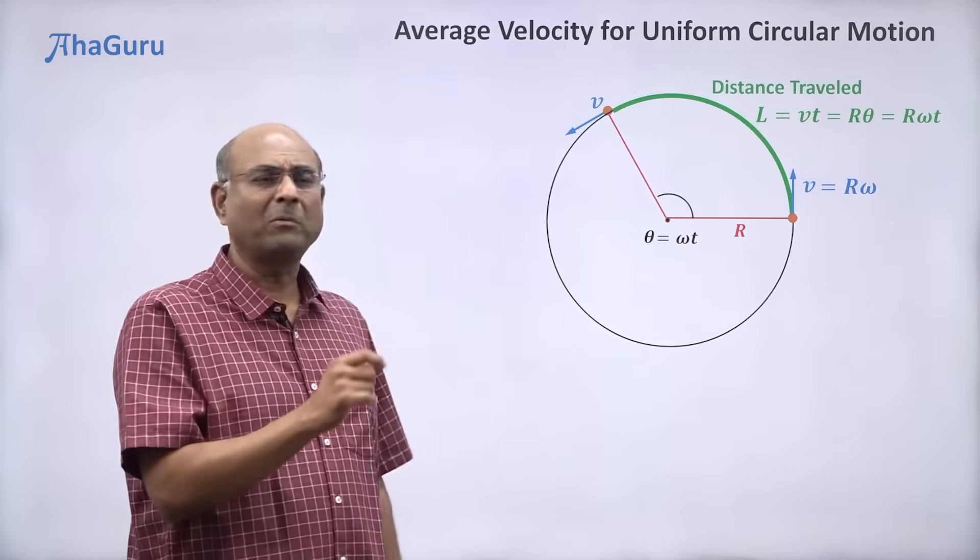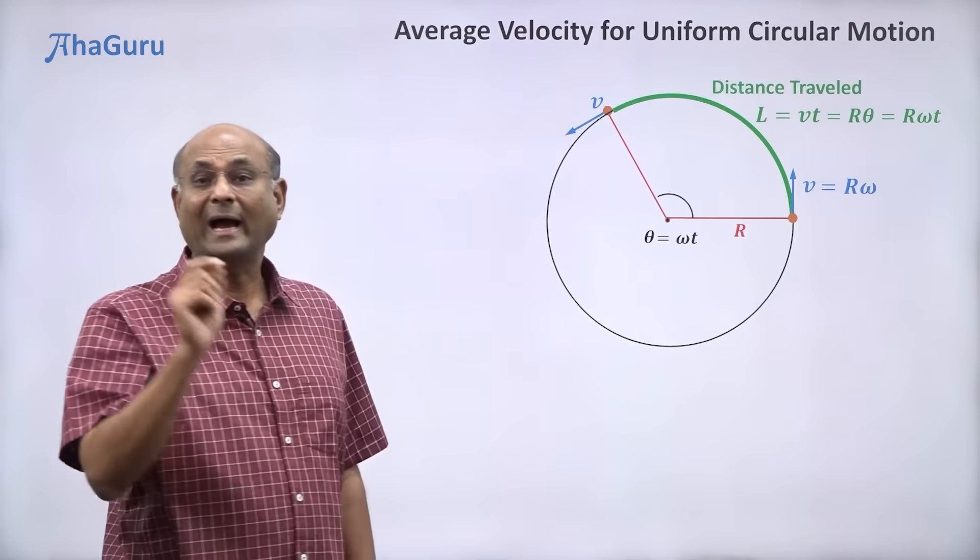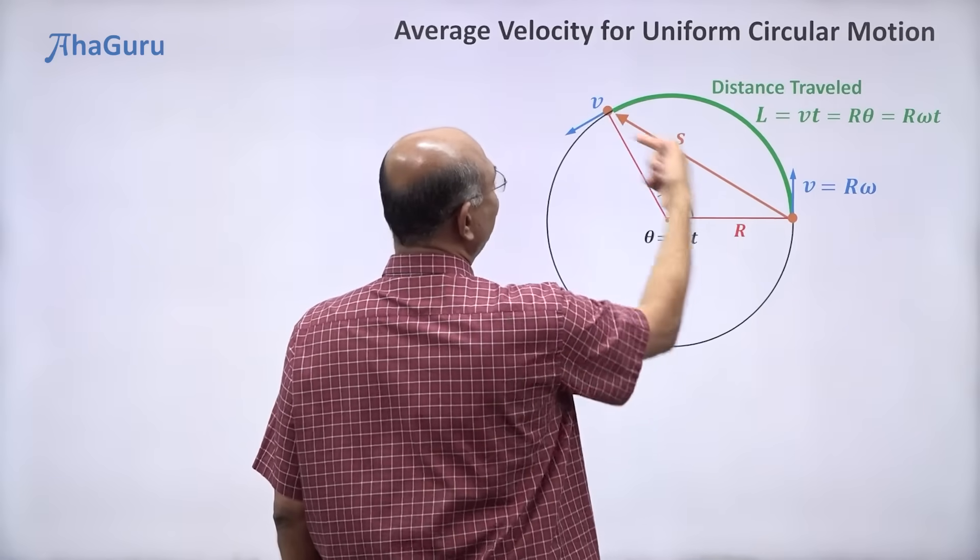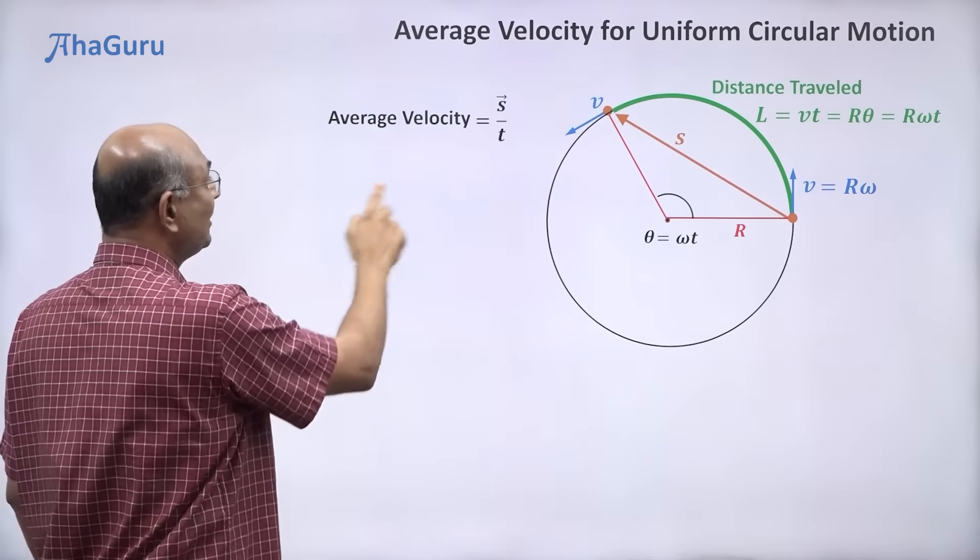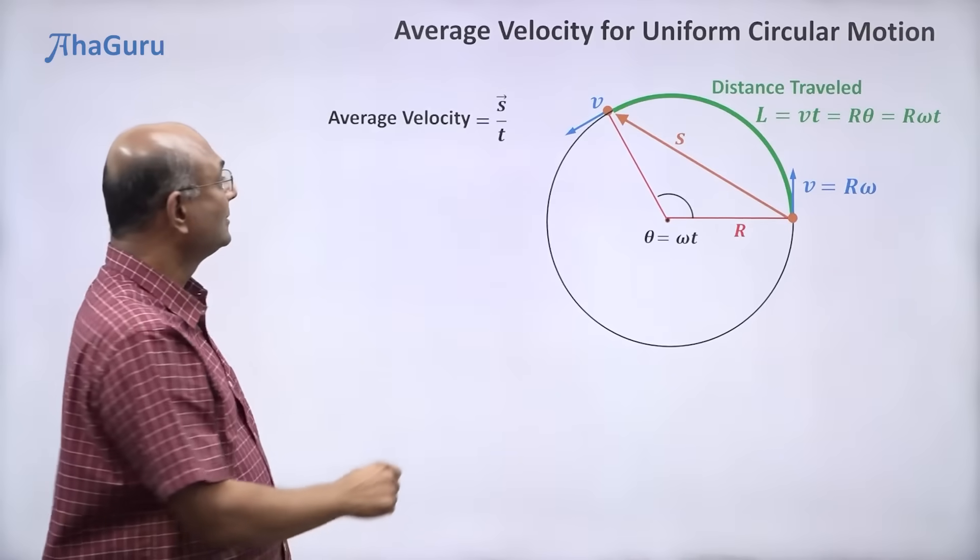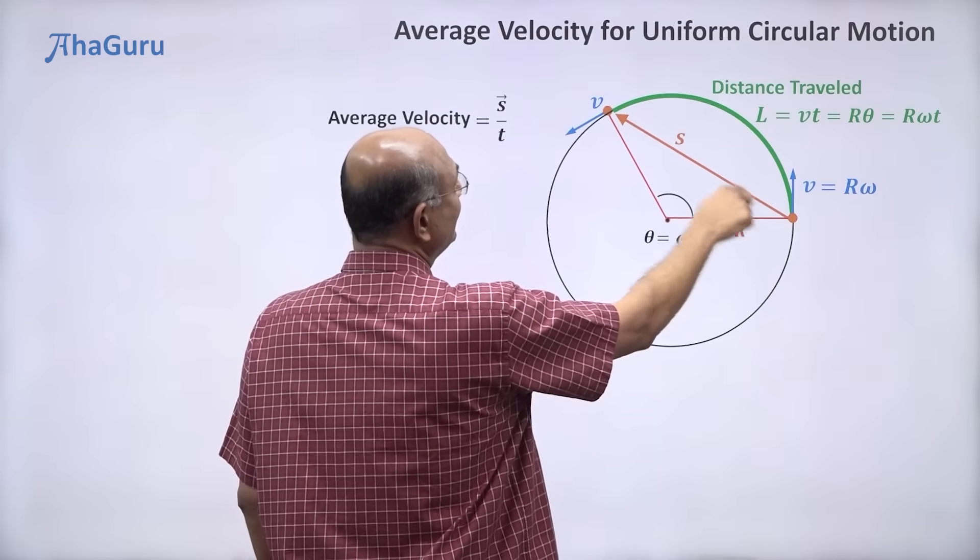But if I want to talk about average velocity, I need the displacement. Displacement is the vector from the starting point to the ending point. And average velocity is displacement by time.